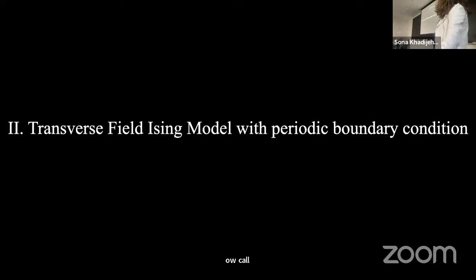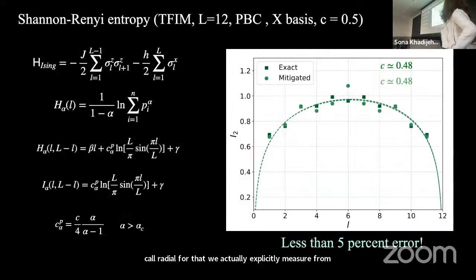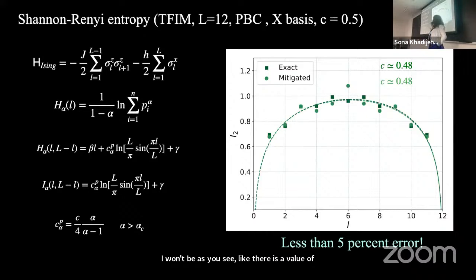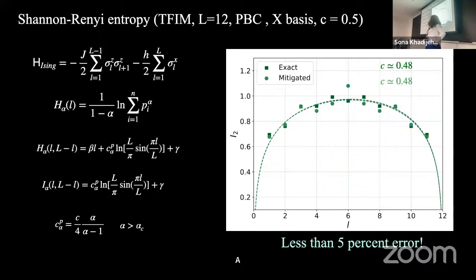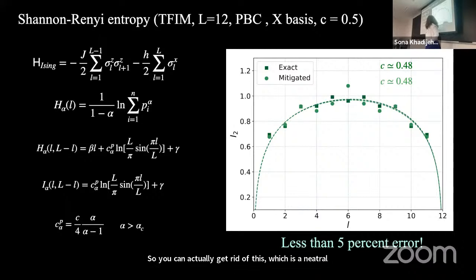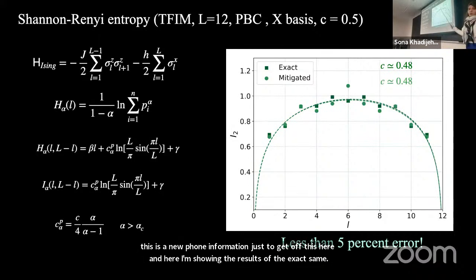For the local Rényi entropy, the probabilities that are bigger have more importance because of the weighting by alpha. This makes it less sensitive to small probabilities whose mitigation might be less accurate. We can calculate what is known as the mutual Rényi information to subtract the linear term, and here I am showing the results of the exact diagonalization and the mitigated experimental data. For both cases, we can see that we obtain better results from the experimental data for the local Rényi entropy compared to the full entanglement entropy approach.